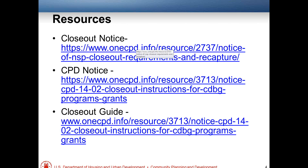There are three resources we encourage everyone to take a look at. The first is the closeout notice itself. Then there is the CPD notice — those are the directions we give from headquarters to the field about how to close out an NSP grant, including forms and other documentation. Note that NSP closeout instructions, as well as CDBG states, disaster recovery, and CDBG-R, are all found in the CPD notice. We also put together a closeout guide that tries to make that legalese more understandable.